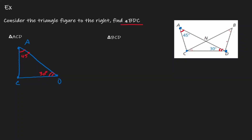Now let me analyze the other triangle. The other triangle we have here is B, D, C. So let me draw triangle BDC individually. Here's B, D, and C. And let me write down what I know about this triangle. I know that angle B has one mark.